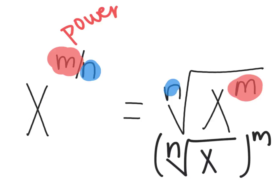The n, your denominator, is called your index, and that is the radical. Like that tells you what root you're taking. It is the same thing as your root.